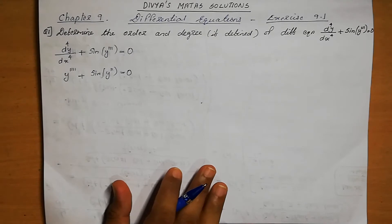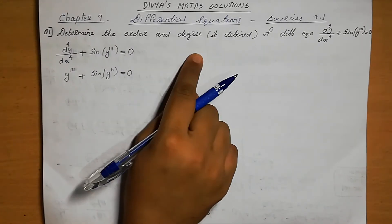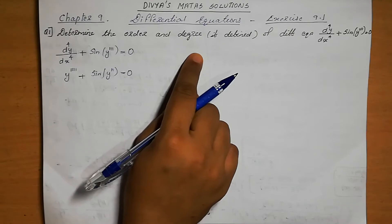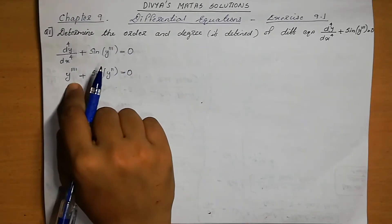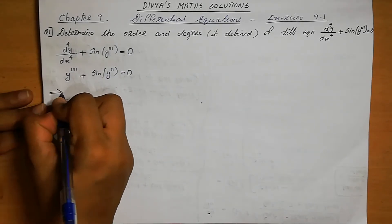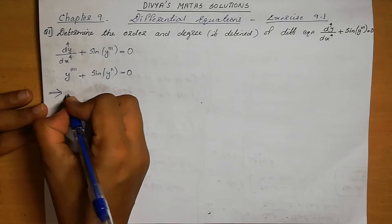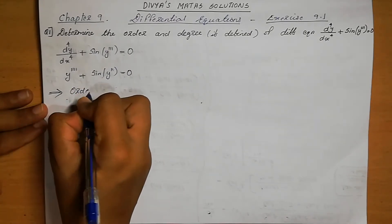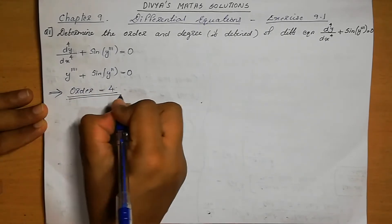The highest order derivative present in the differential equation is 4. So the order is equal to 4. We select the order by identifying which derivative has the highest order — that is the fourth derivative here.